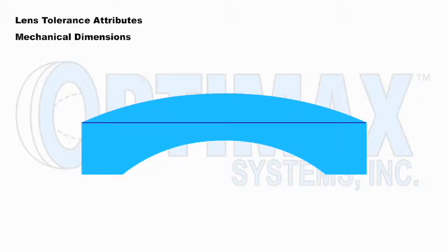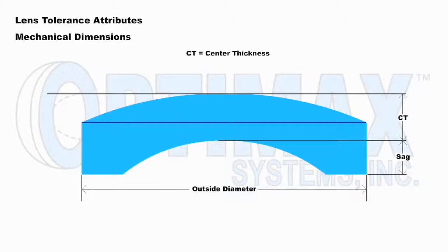We begin by looking at the essential mechanical attributes: outside diameter, sag, center thickness, and overall height.